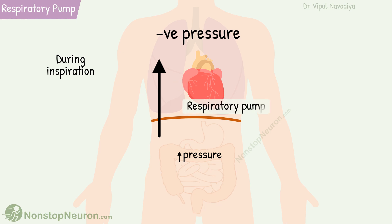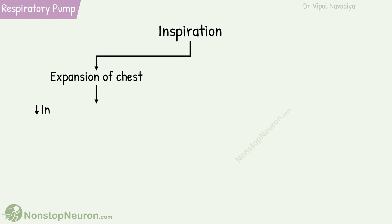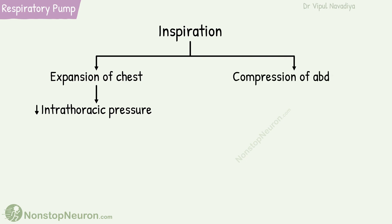This mechanism of respiratory activity contributing to venous return is called the respiratory pump. In summary, during inspiration, expansion of the lungs makes the thoracic pressure more negative, and compression of the abdomen increases intra-abdominal pressure.